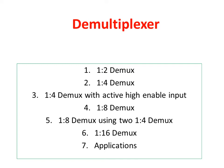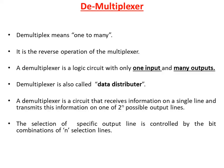In this video I am going to discuss D-multiplexor. D-multiplexor means one to many. It is a reverse operation of the multiplexor. A D-multiplexor is a combinational logic circuit with only one input and many outputs. It is also called as data distributor.